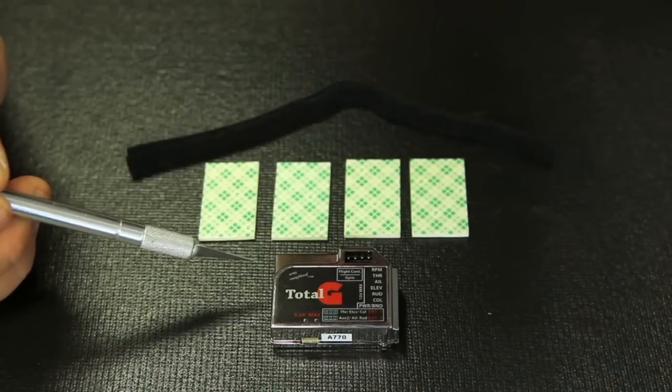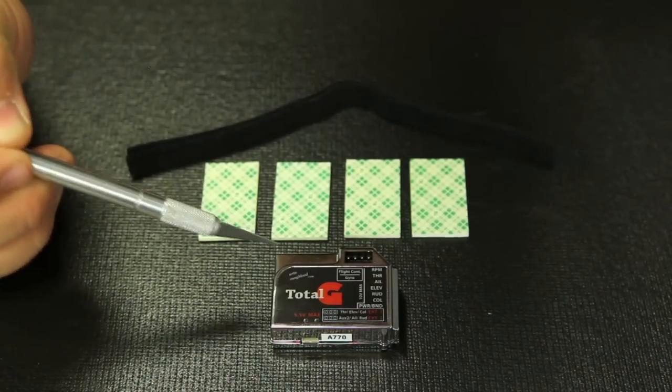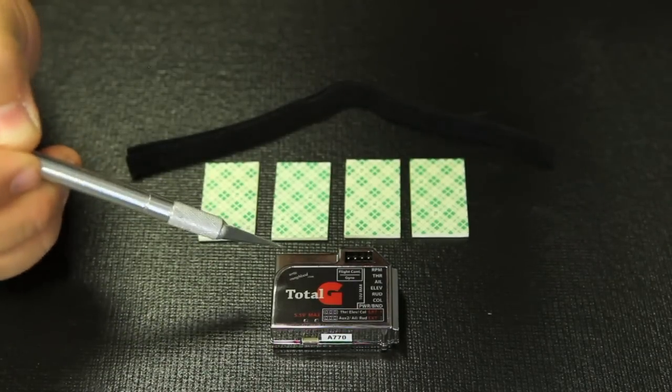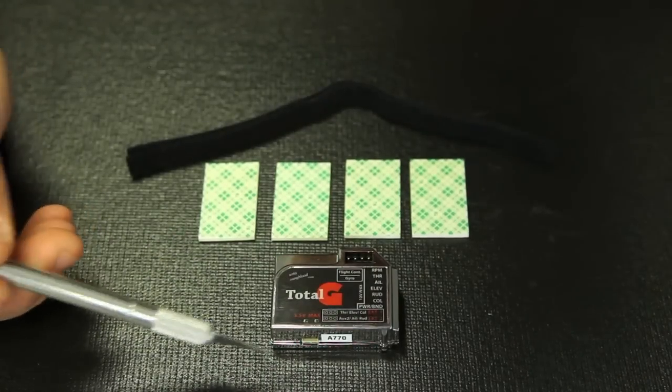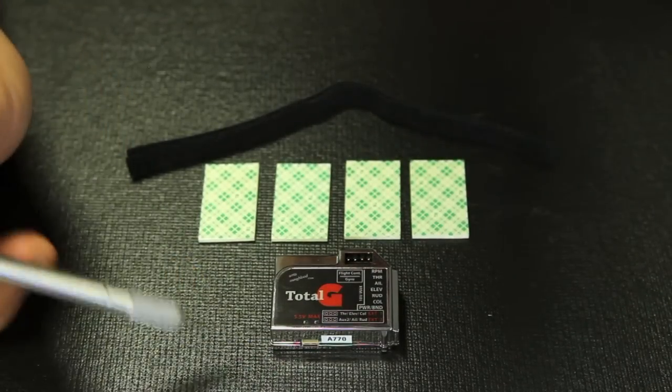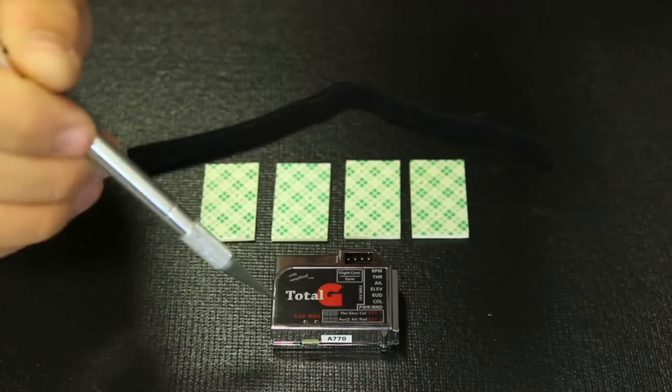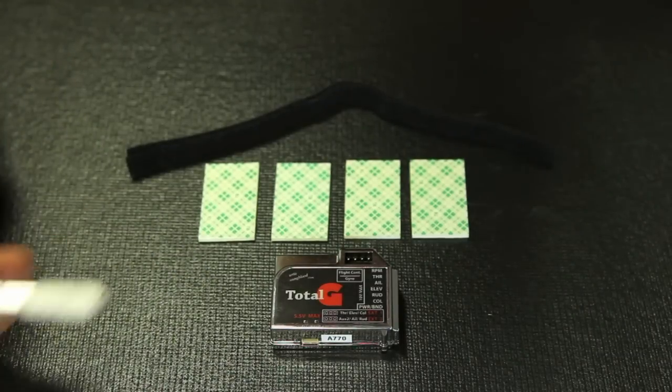Inside the manual of the Total-G, it does give you four mounting positions that you can mount the Total-G in. We do recommend, obviously you have to stick to one of those four, but when you do mount it, make sure the unit is square to the main shaft and square to the helicopter. Otherwise, the machine might do some weird stuff in rolls.